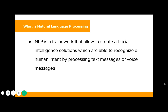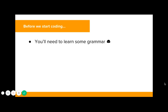So what is natural language processing? Here's a definition: NLP is a framework that allows you to create artificial intelligence solutions which are able to recognize human intent by processing text messages or voice messages. But before we start coding, before we go into the fun stuff, you'll need to learn some grammar, because grammar and natural language processing go hand in hand. In order to recognize intent and to create entities, you need a bit of grammar. But it won't be too long — just the first part of the class — and then you can get to the fun coding part.